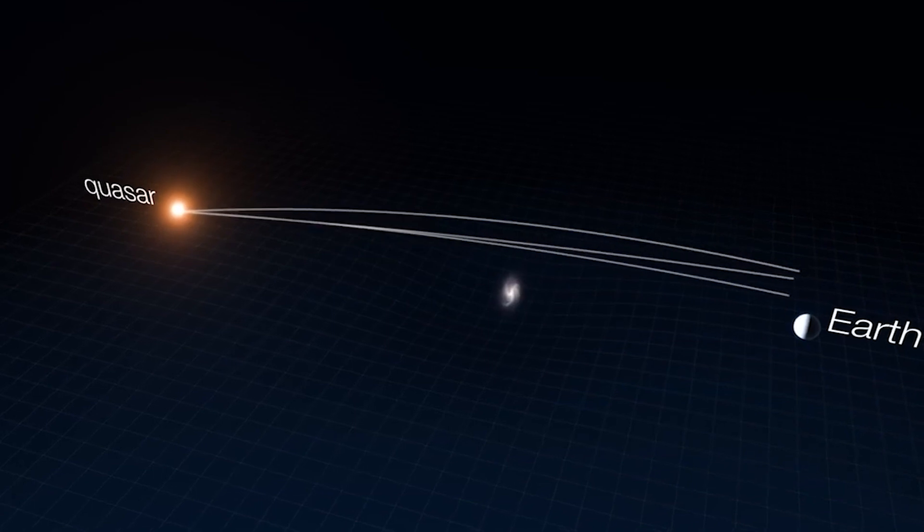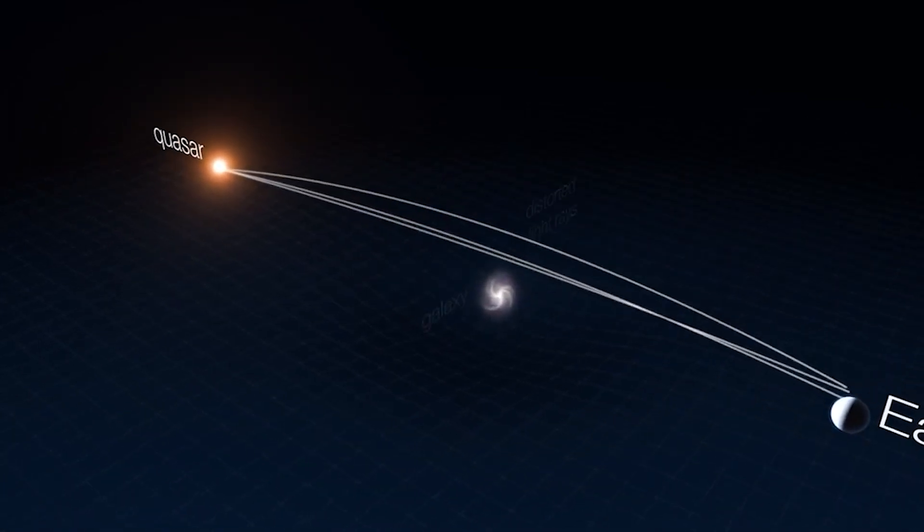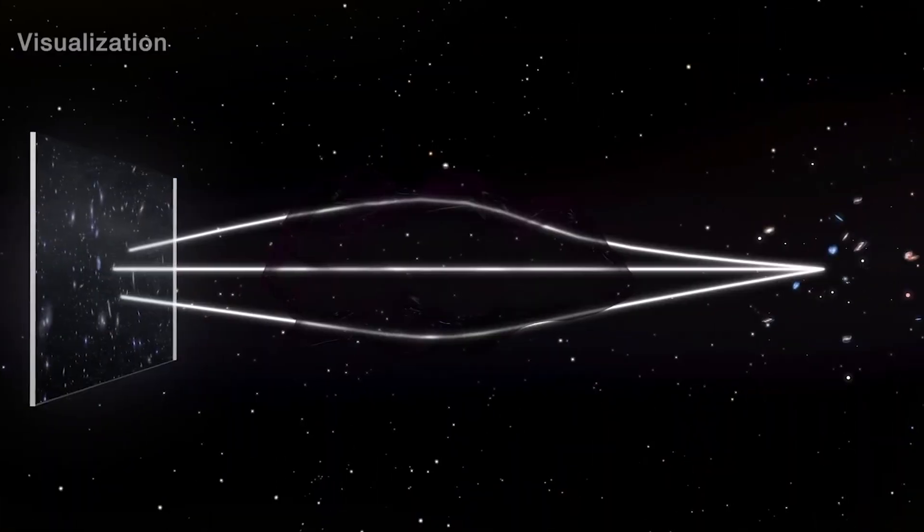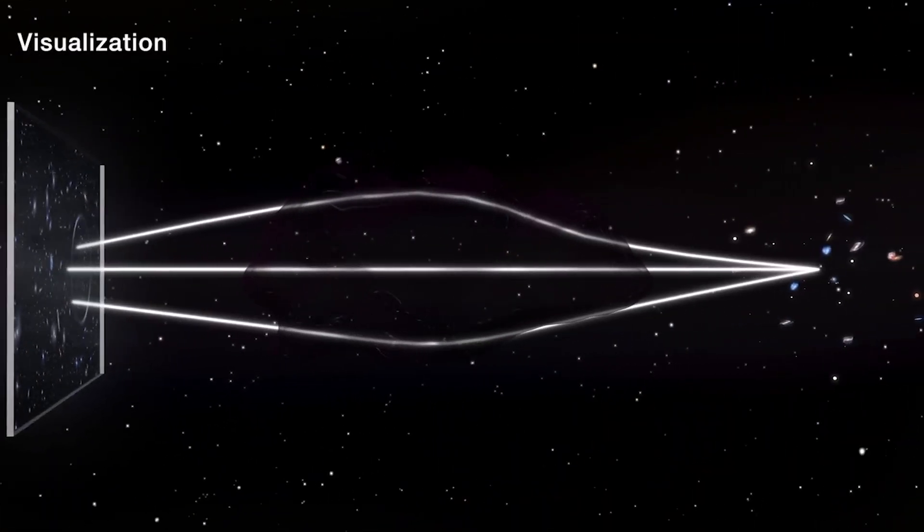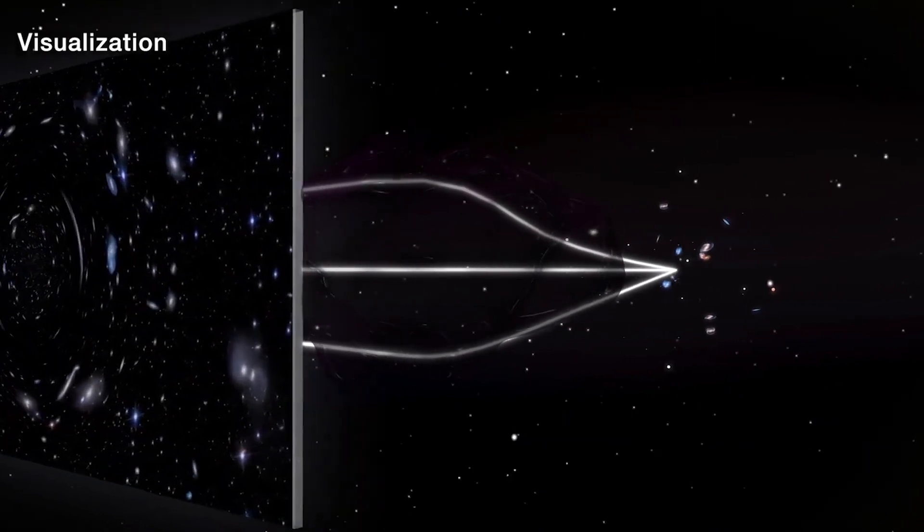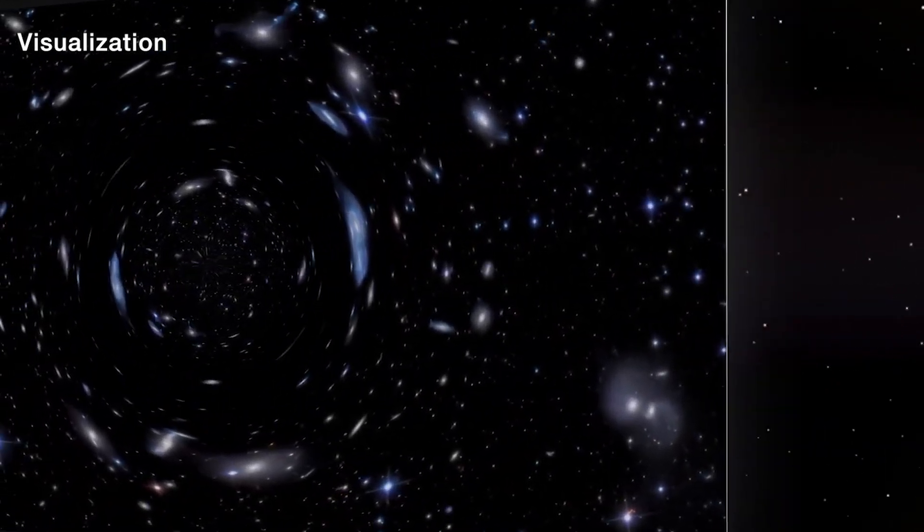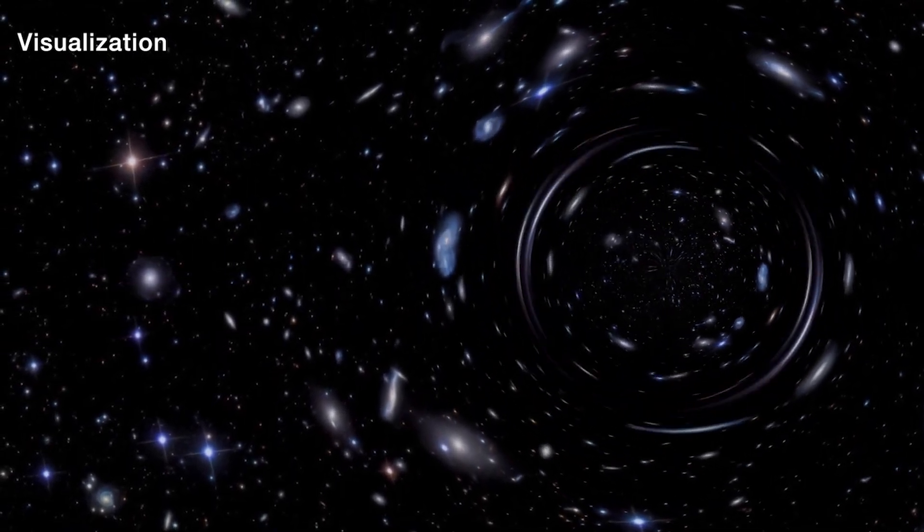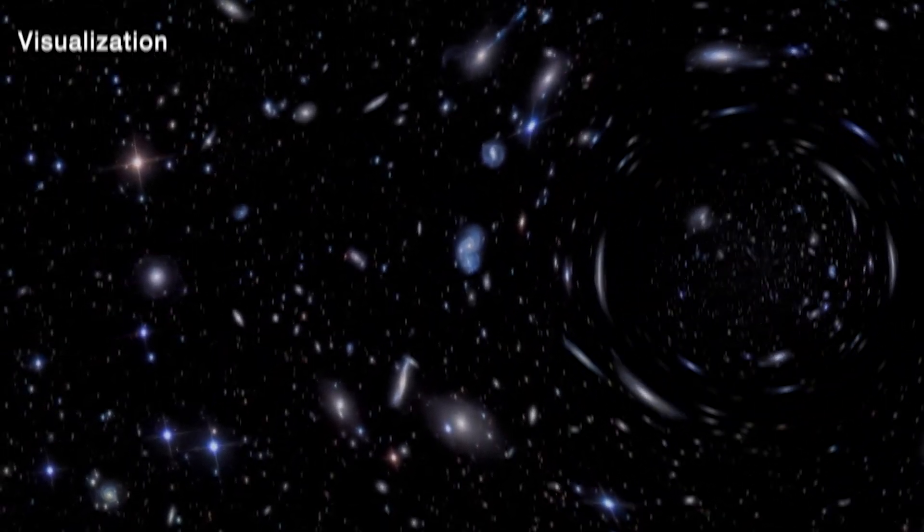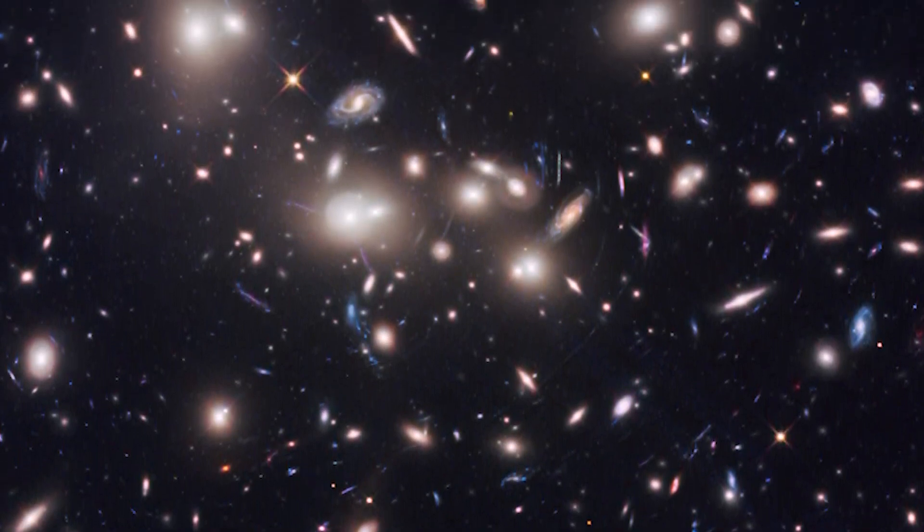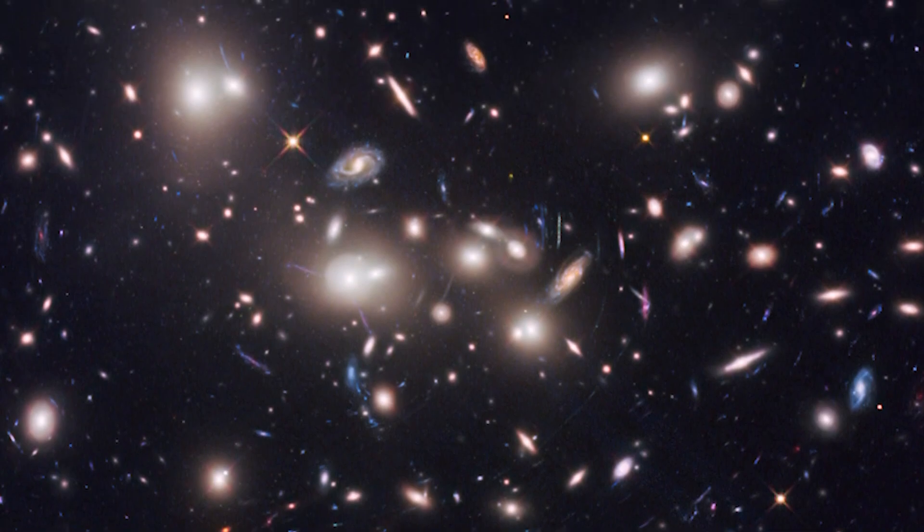One way that scientists have been studying dark matter is by looking at the gravitational lensing of distant galaxies. When light passes through a massive object like a galaxy, it gets bent and distorted by the object's gravity. By studying the patterns of distortion in the light, scientists can infer the distribution of mass in the object, including the dark matter. This technique has allowed us to map out the distribution of dark matter in the universe and gain a better understanding of its properties.